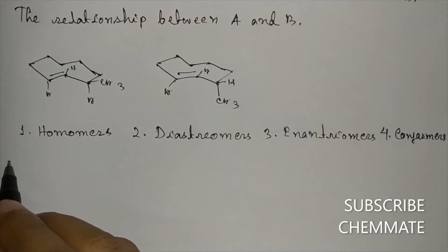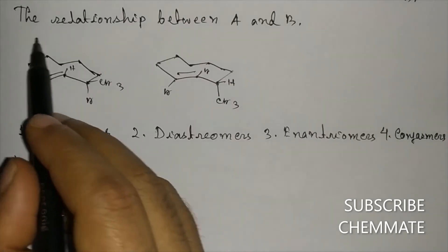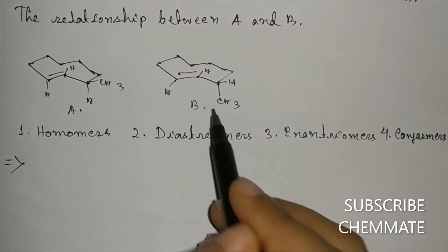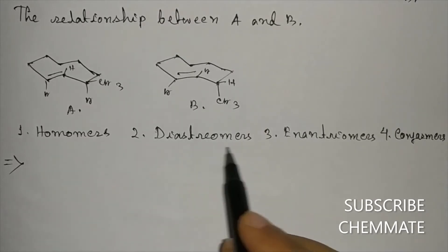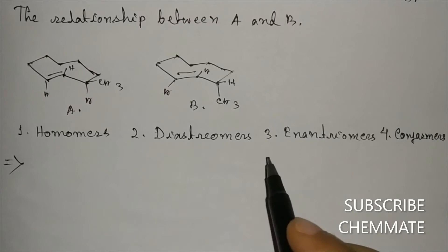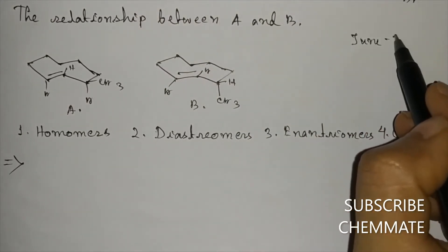Hi guys, here is an interesting question: the relationship between A and B. This is A and this is B. The options are homomers, diastereomers, enantiomers, and conformers. What will be the true answer? This question came in June 2019.